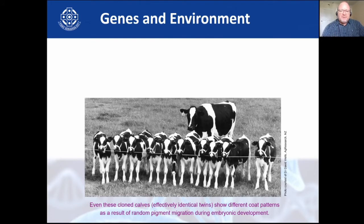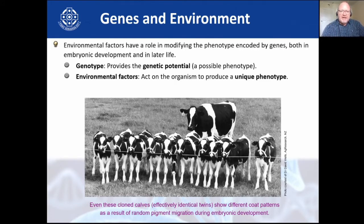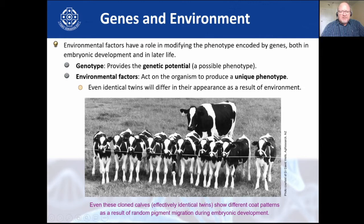These are calves that have been cloned — they have identical DNA to each other. But when you look at them, even though they have identical DNA, they are all slightly different: the patterning is slightly different, one has a white area that doesn't appear on another, one has a black leg extending differently, another has a band. This is all because of environmental factors — environmental factors act on an organism to produce a unique phenotype.